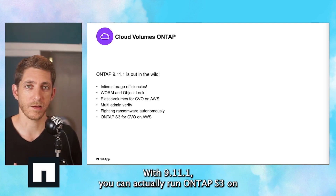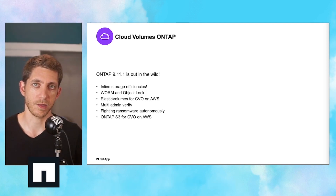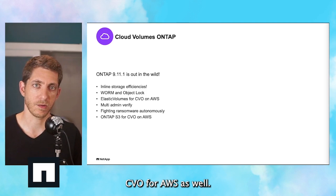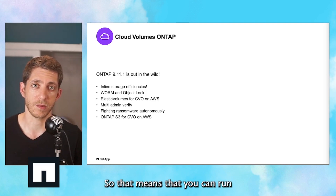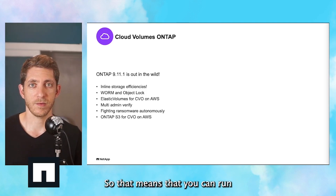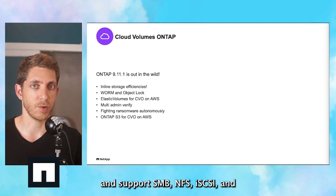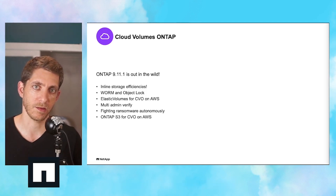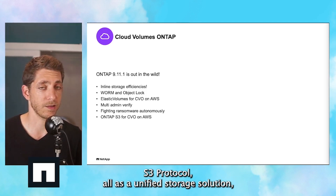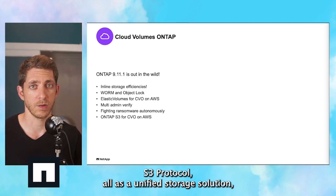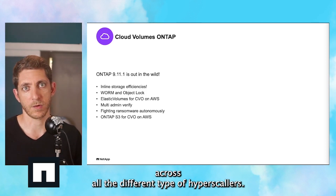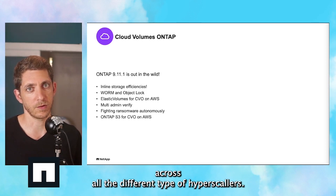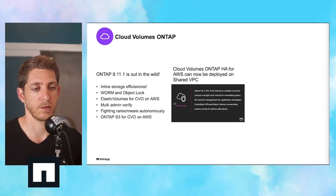With 9.11.1, you can actually run ONTAP S3 on CVO for AWS as well. That means CVO can run and support SMB, NFS, iSCSI, and S3 protocol — all as a unified storage solution across all the different hyperscalers.